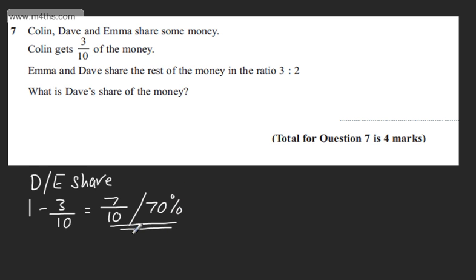Now what we've got is a ratio. The ratio is given to be three to two. So Emma's going to get three parts to Dave's two parts. So what I'm going to say now is five parts in total.